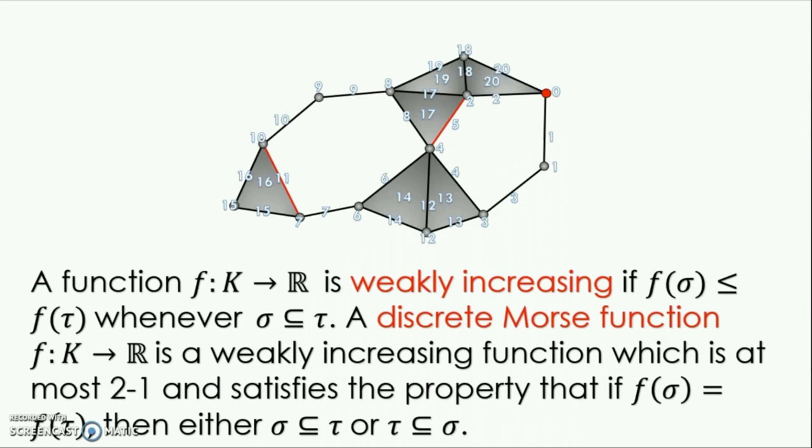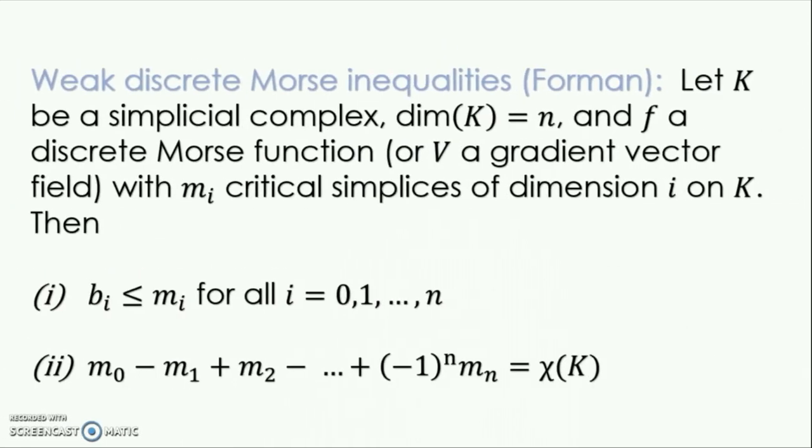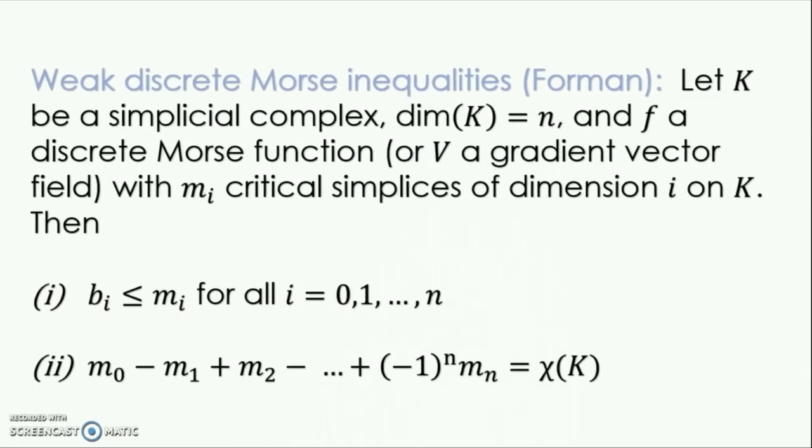So, what can discrete Morse functions and gradient vector fields do for us? The following theorem is due to Robin Forman and is known as the weak discrete Morse inequalities. If we have some simplicial complex K of dimension n and a discrete Morse function or gradient vector field on K with m_i critical simplices of dimension i, then the number of critical simplices bounds from above the Betty numbers in each dimension. Furthermore, the alternating sum of the critical simplices is equal to the Euler characteristic.